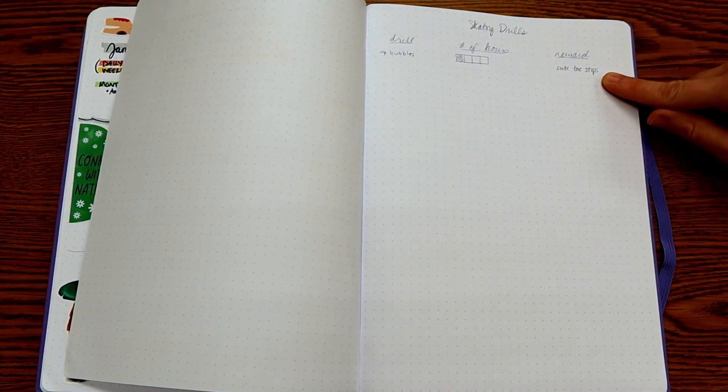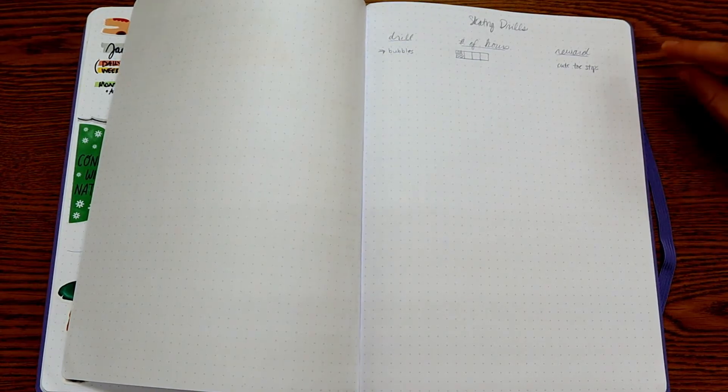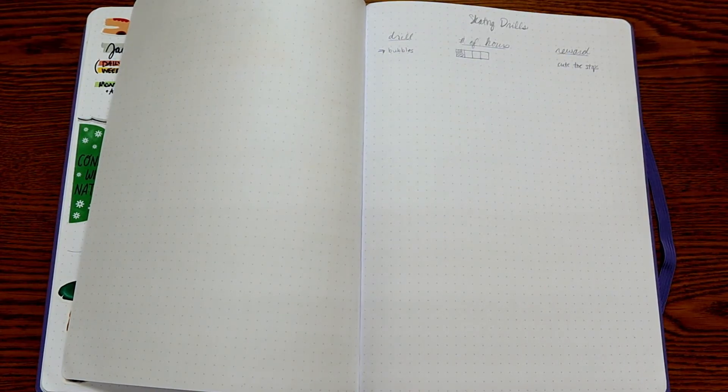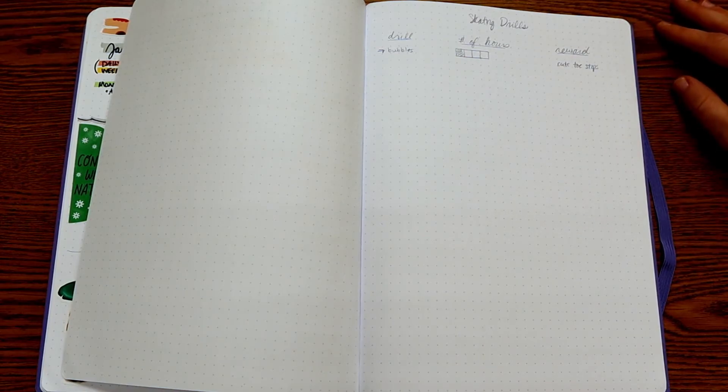Once it's full, I can get whatever reward I decide to give myself. So these are trackers that are super flexible. You could change them up with whatever you want to track or just see what you're doing, look back on what you've accomplished over the year.